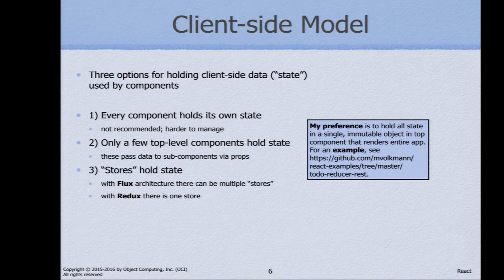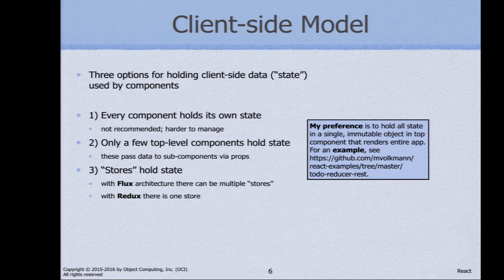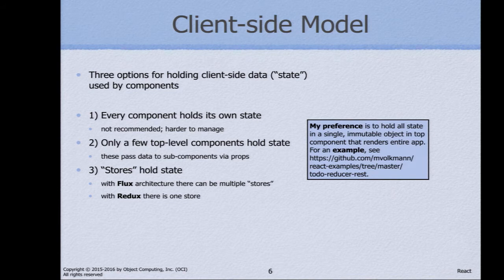Let's think about where you could hold data in your app. Every component can hold data in a thing called state. You could have only a few top-level components that hold state and push data down through props. The last approach is to use stores — there's an architecture called Flux that's very popular with React, where data is outside the components, an action gets sent to the store, it changes its data, and tells the components to re-render. Option one of holding state everywhere is not really good. Two and three are okay — I kind of prefer option two.